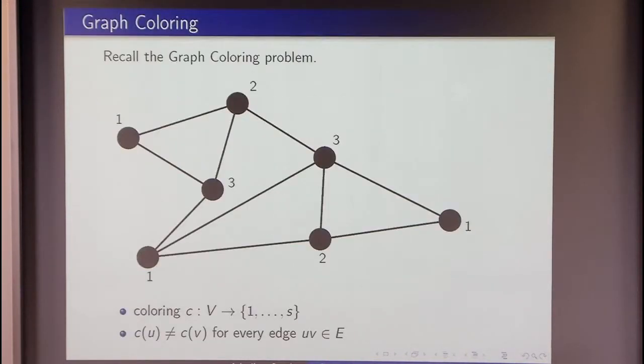Let us start from the classical graph coloring problem. We have a graph and we want to color its vertices in such a way that if we have an edge, then the colors of both two endpoints need to be different.